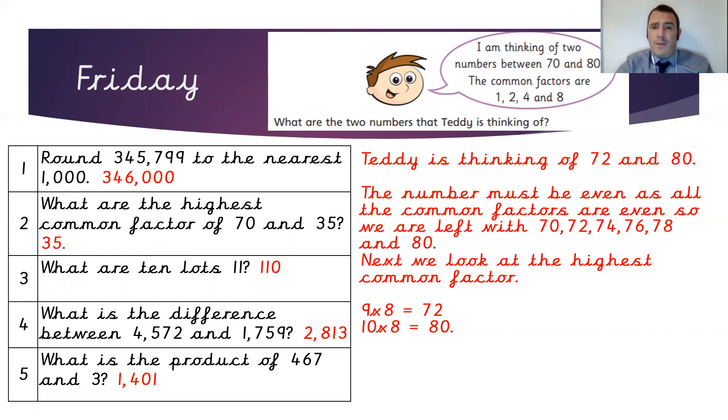From what we've done this week, we know that factors of 8 will also be factors of 4. So we can look at the highest common factor between the two numbers, which would be 8. We look on our list for numbers that would be multiples of 8. The two multiples of 8 that we've got are 72, which would be 9 times 8, and 80, which would be 10 times 8. So the two numbers that Teddy was thinking of were 72 and 80.